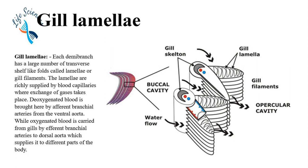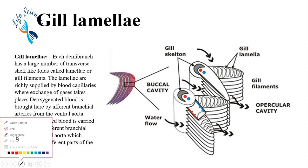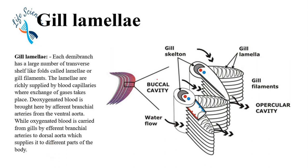Let's start our lecture. Each demi-branch has a large number of transverse shelf-like folds called gill lamellae or gill filaments. These transverse folds — you can see here — are the gill filaments, the shelf-like projections.